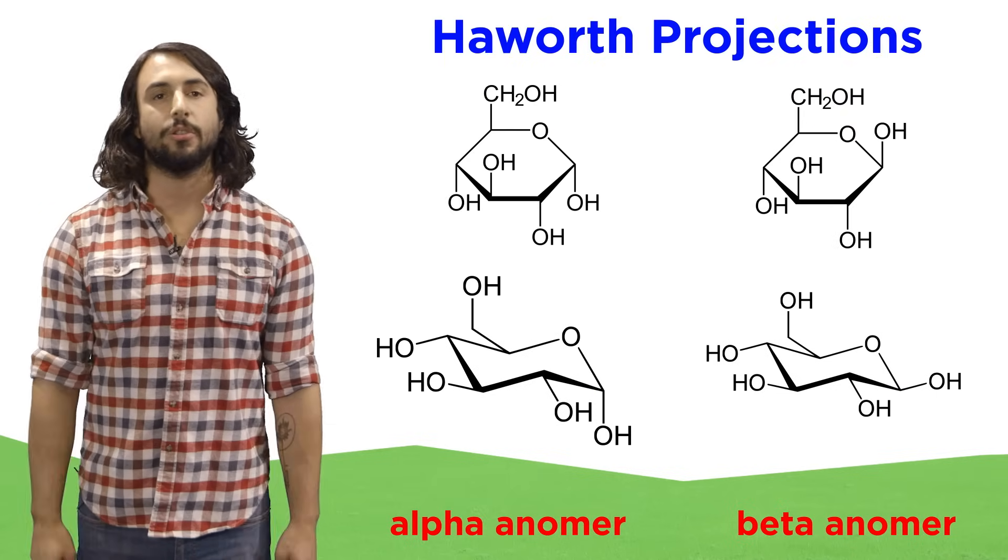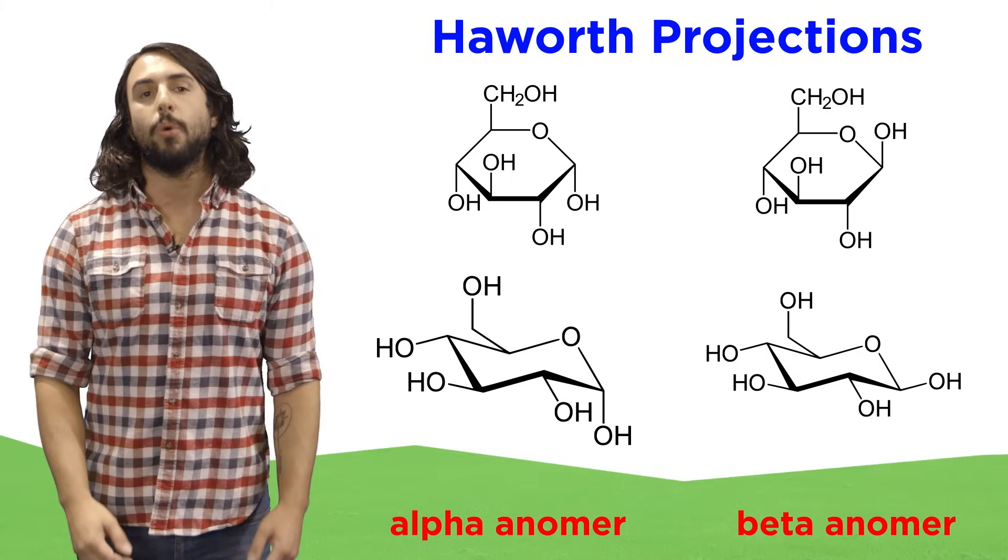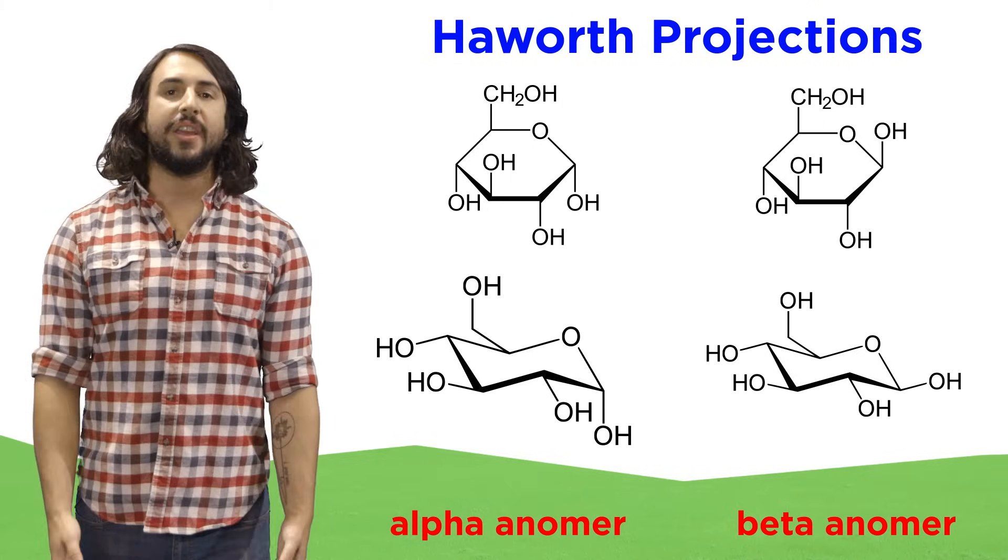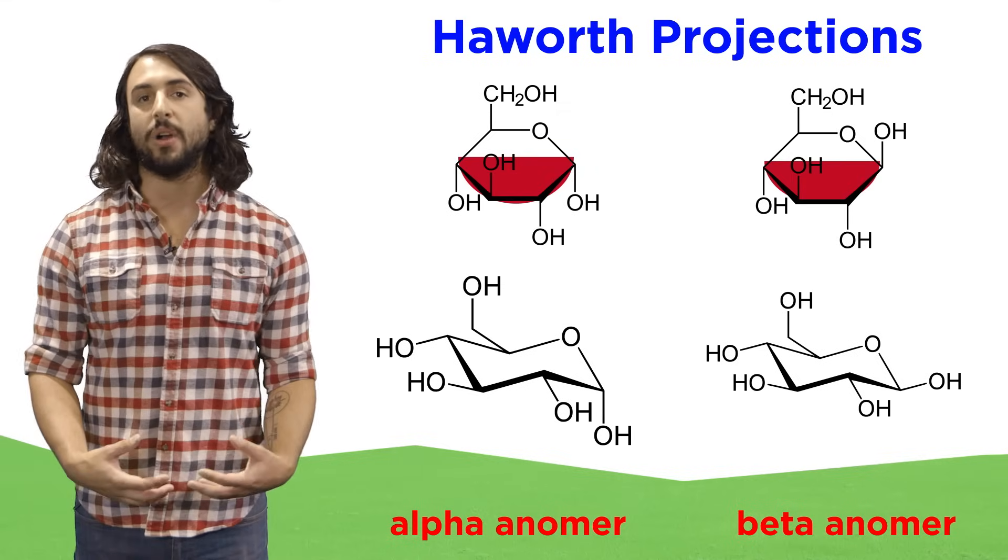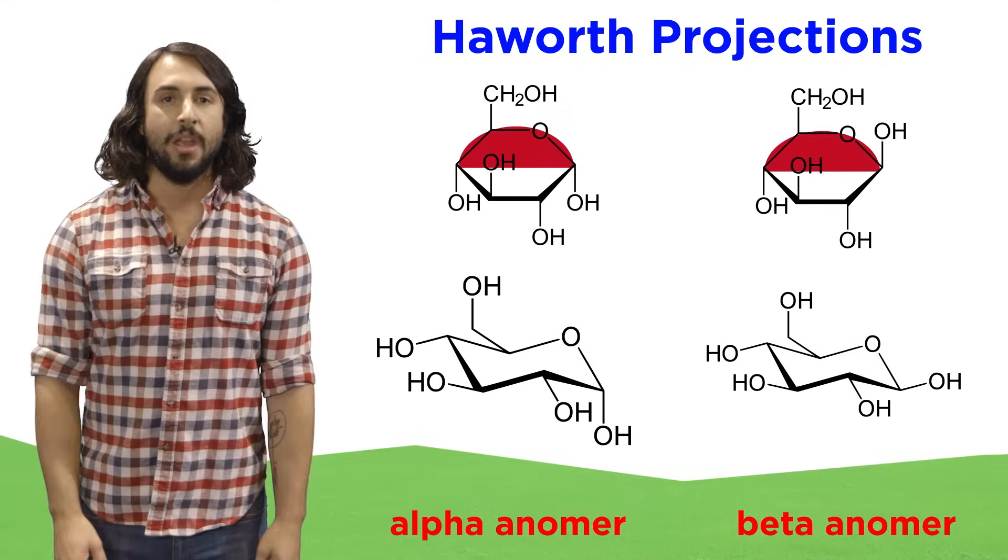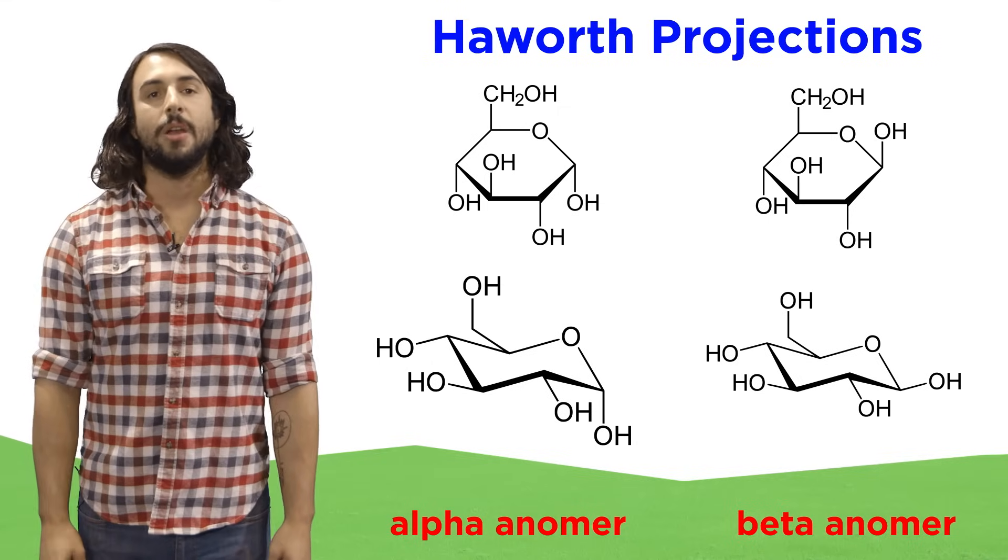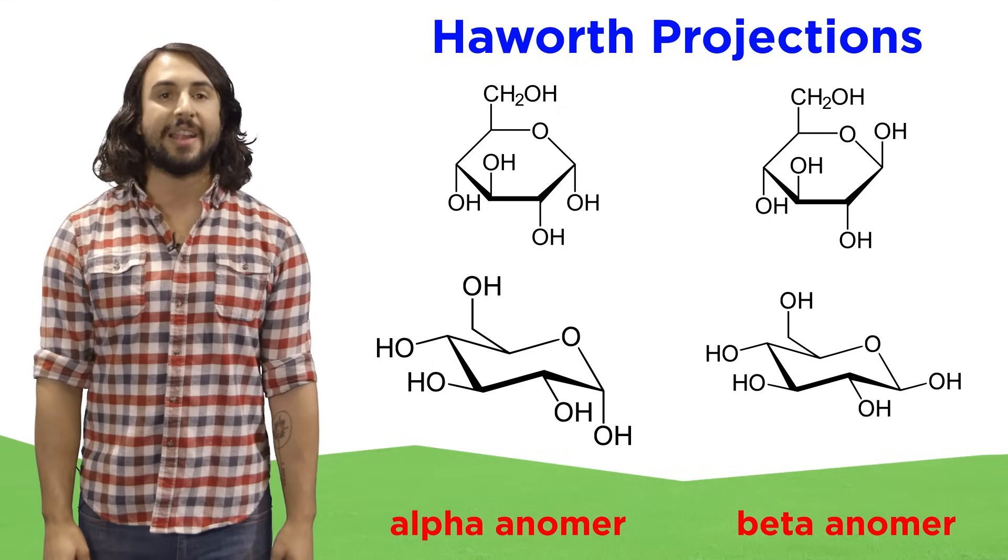When we draw cyclic monosaccharides, we sometimes use Haworth projections. With these, we look at the ring from the edge, meaning this part of the ring is closer to us and this part is further away from us. And we show the functional groups projecting straight up and straight down.